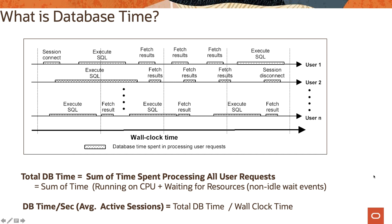If you use Enterprise Manager, you see the page shows colored areas that represent database time, and you mostly focus on the biggest areas for performance consideration. The definition of total database time is the sum of time spent processing all user requests — meaning sum of time running on CPU plus waiting for resources which are non-idle wait events. Non-idle wait events include any kind of contentions, latches, or logs, and they all contribute to database time.